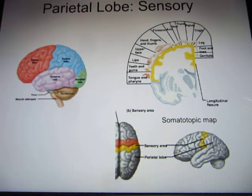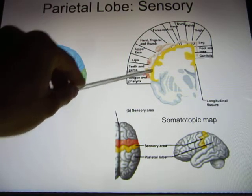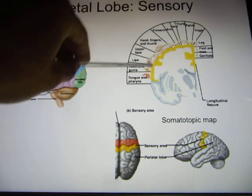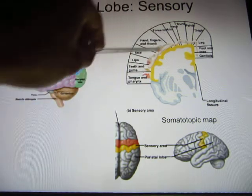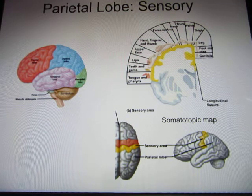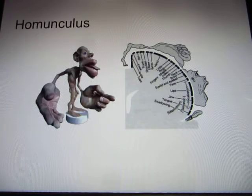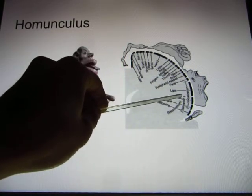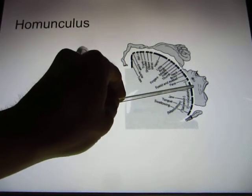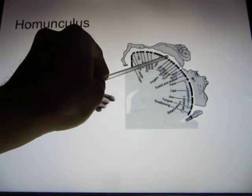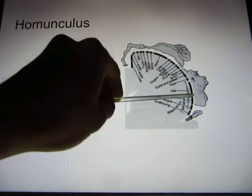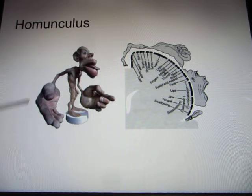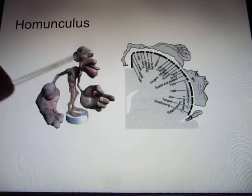Your parietal lobe handles sensory function. Your somatosensory cortex is in your parietal lobe, located in the post-central gyrus, and you have a whole body map that analyzes body information. But the somatosensory cortex is not proportional to body size — you have a lot of neurons analyzing information from your face, especially your lips, and your hand. If you redrew your body based on the somatosensory cortex it would look distorted, and this is called the homunculus. It tells you your brain really favors your fingers and your face.